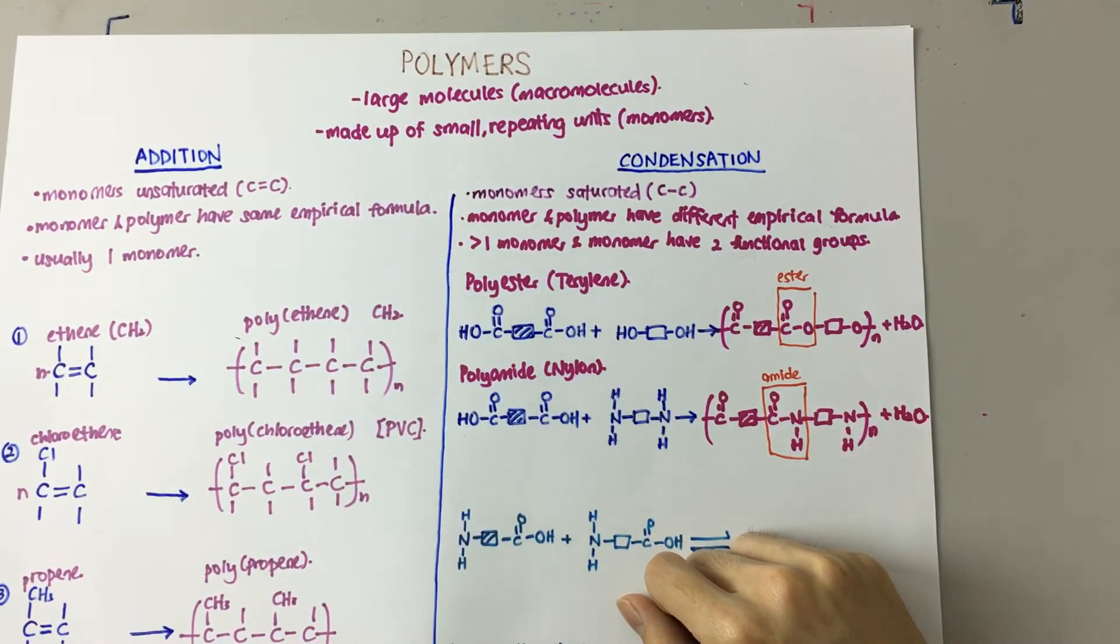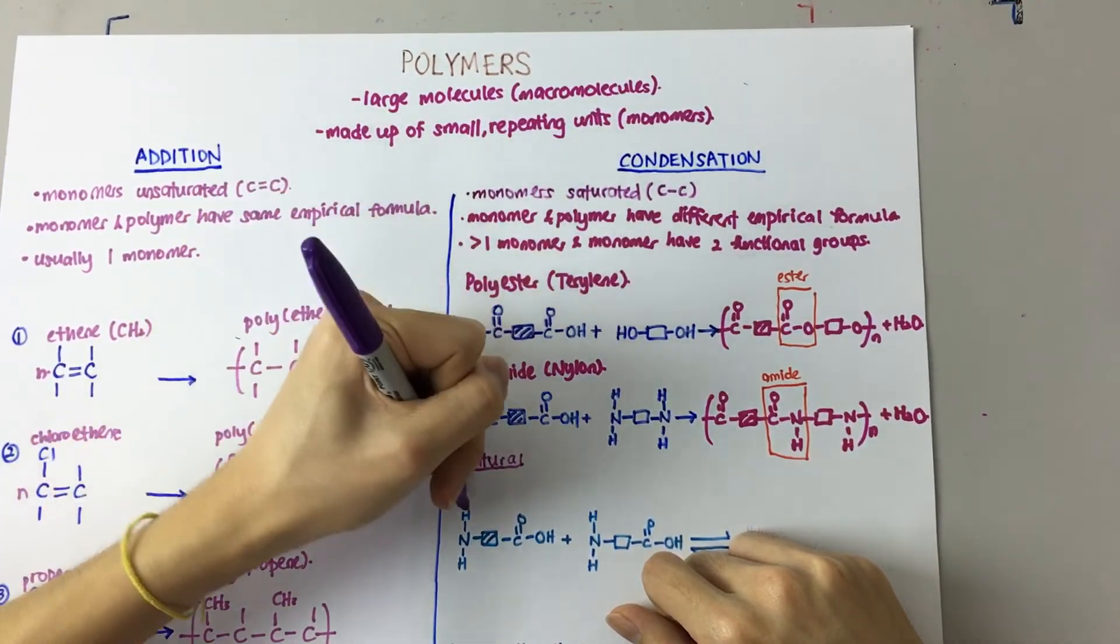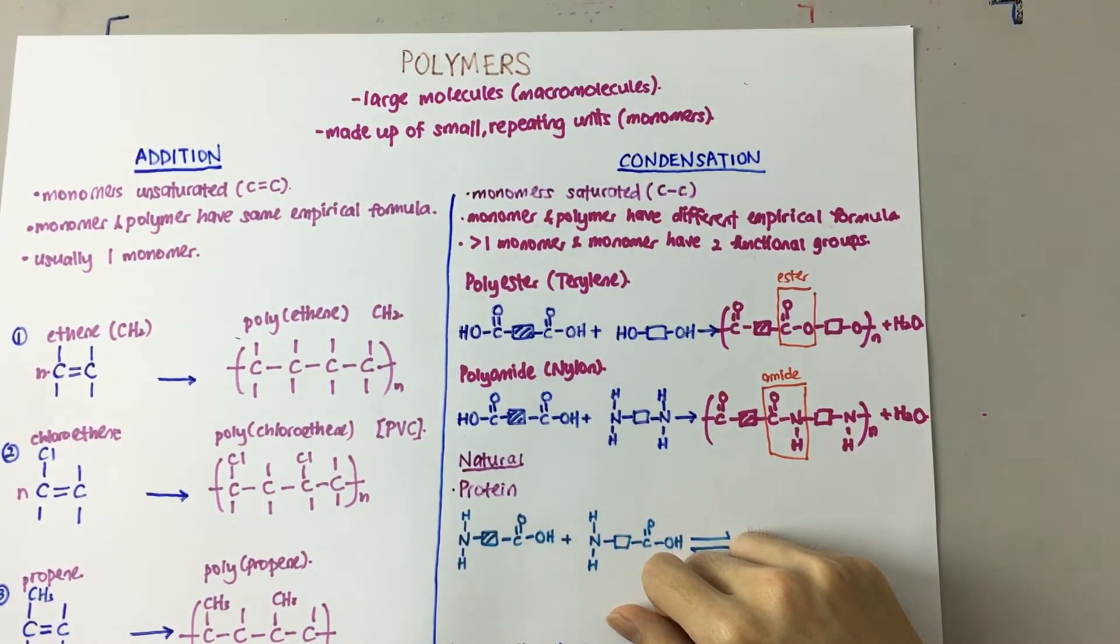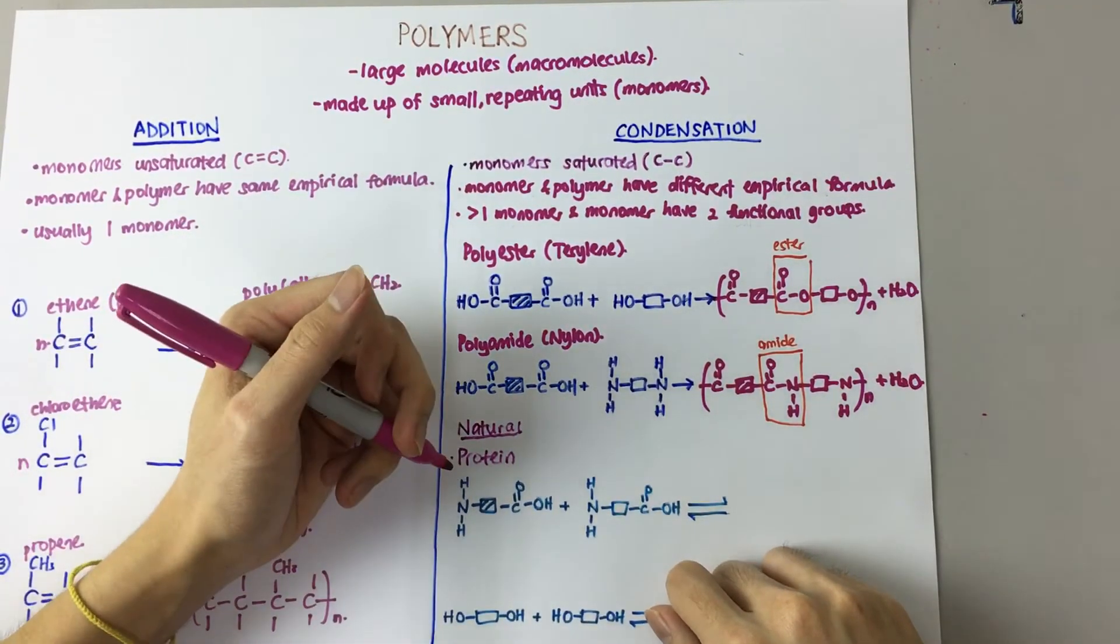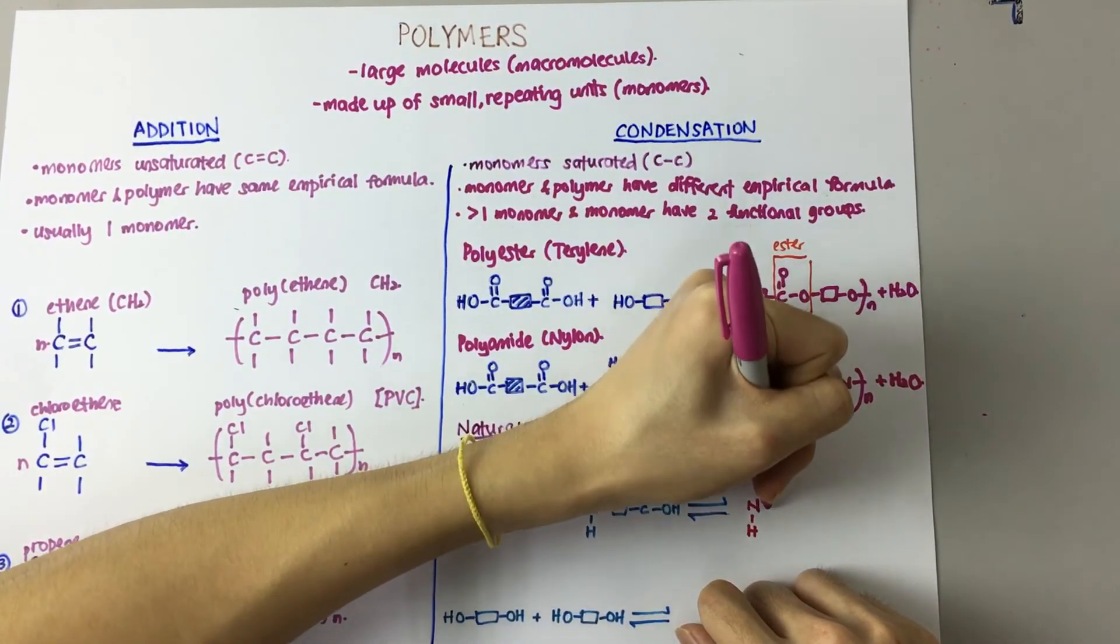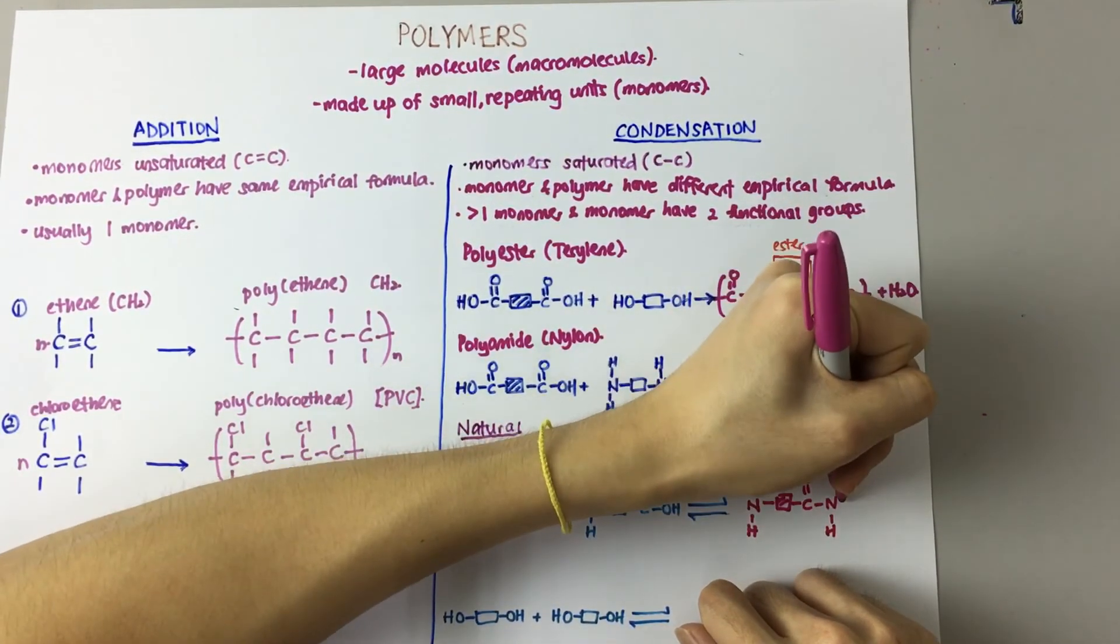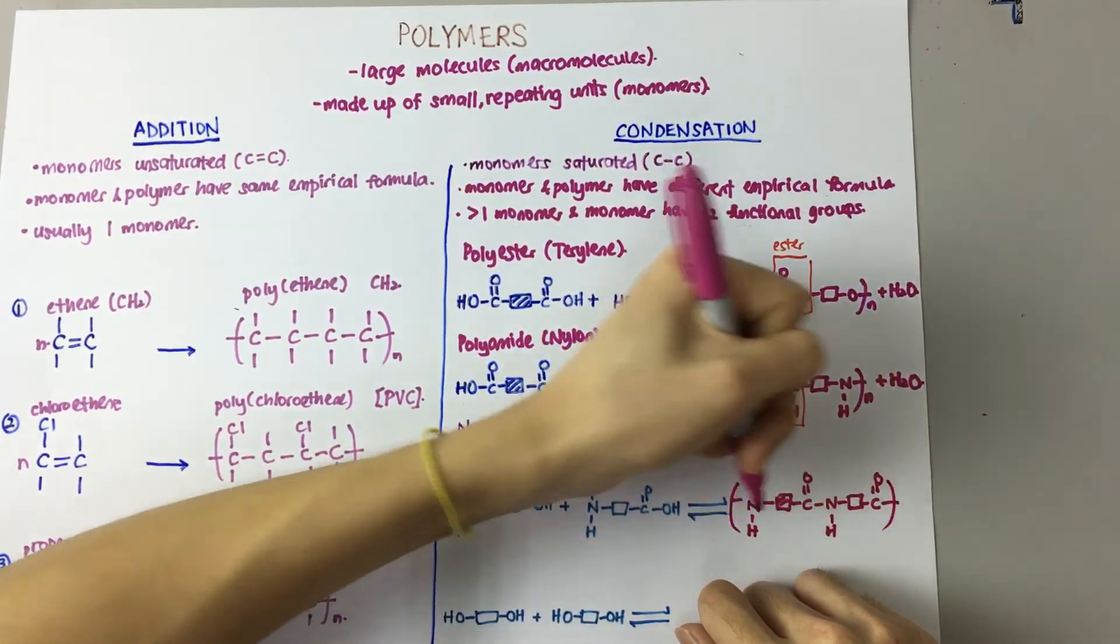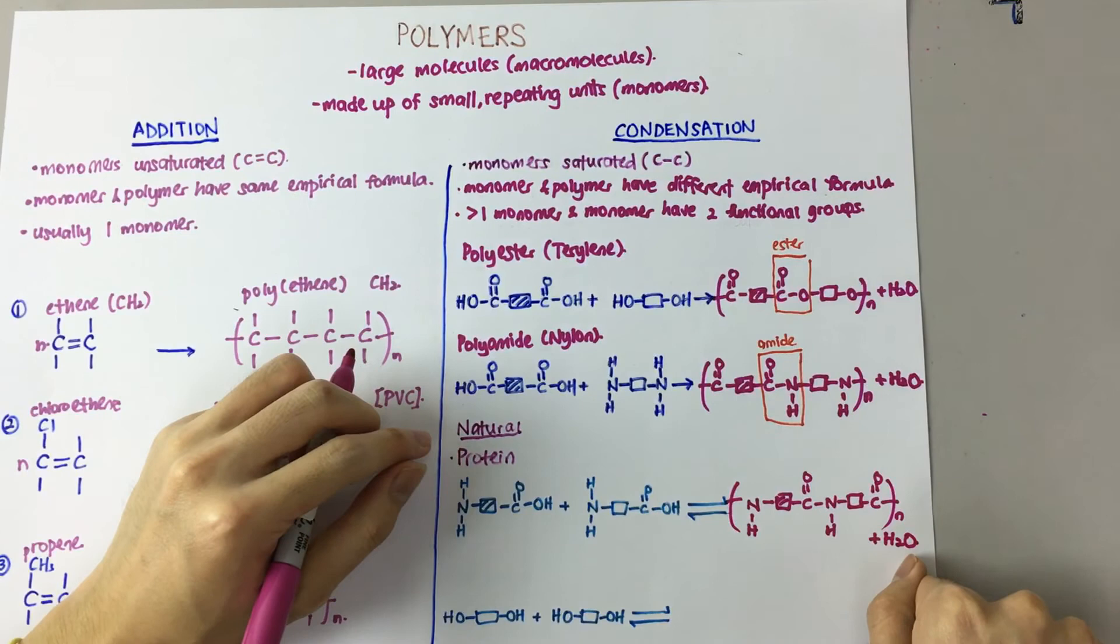Now, we're going to look at some natural polymers. Alright, the first one here is proteins. Now, if you notice, proteins have two different functional groups in the monomer. Alright, but they have the same linkage as an amide. And in condensation polymer, a small molecule such as water is always lost.